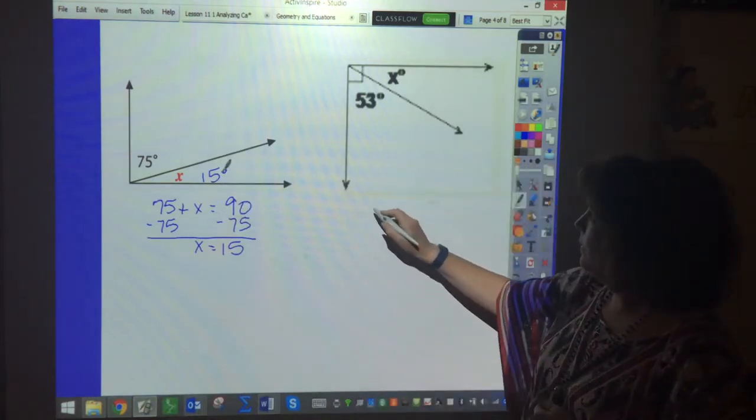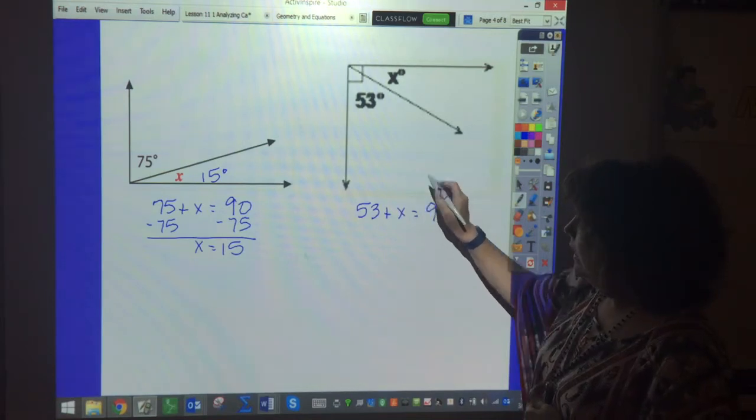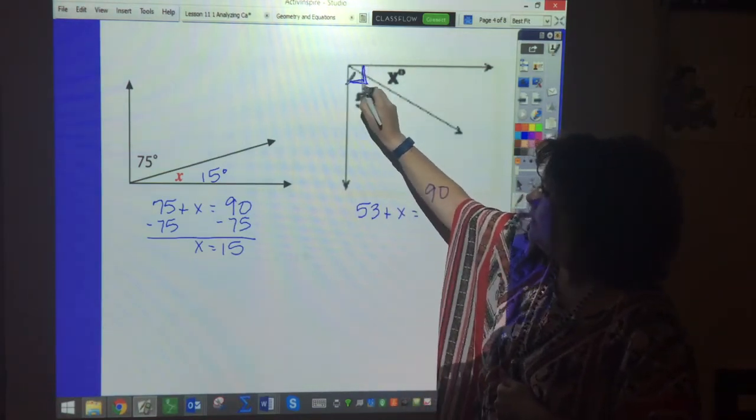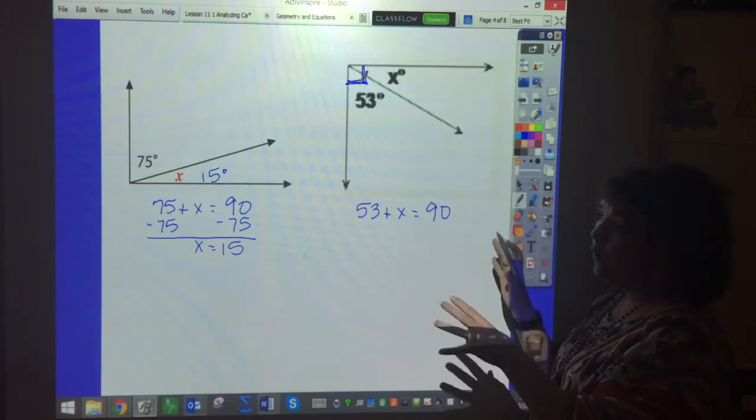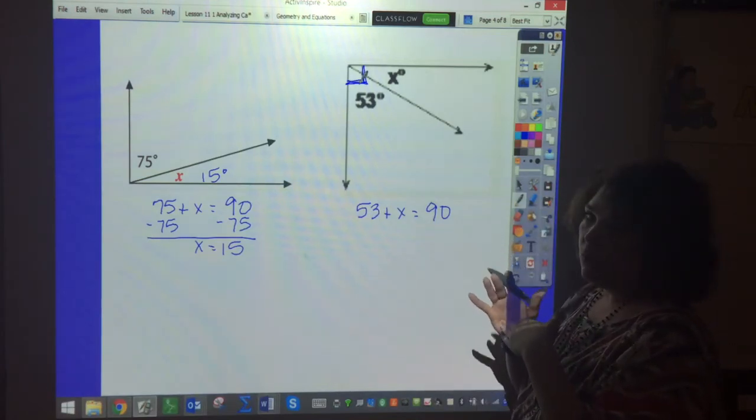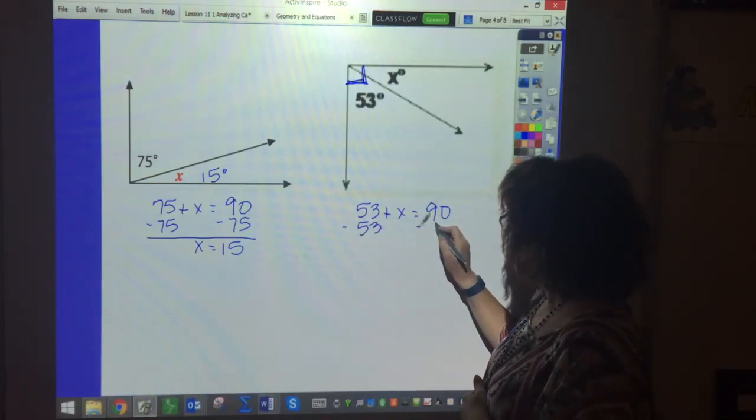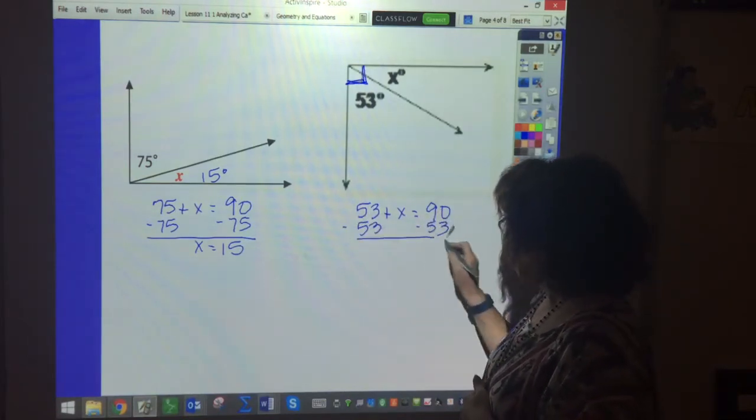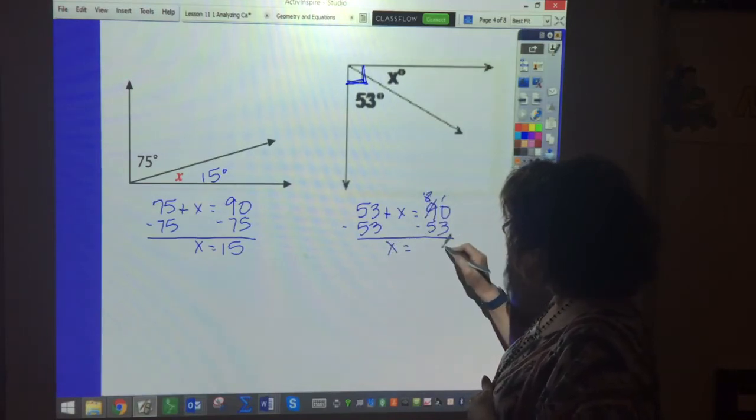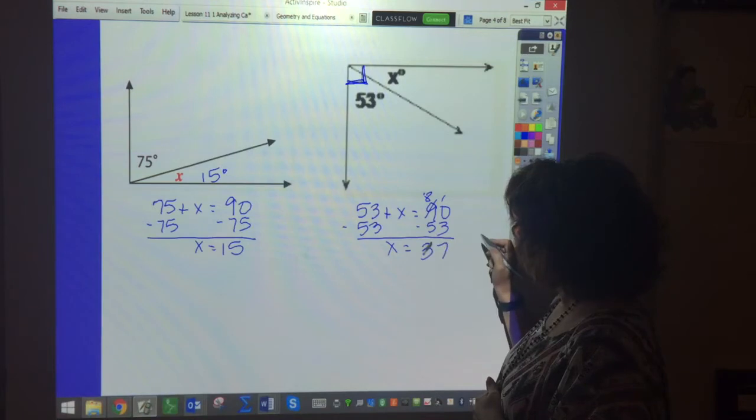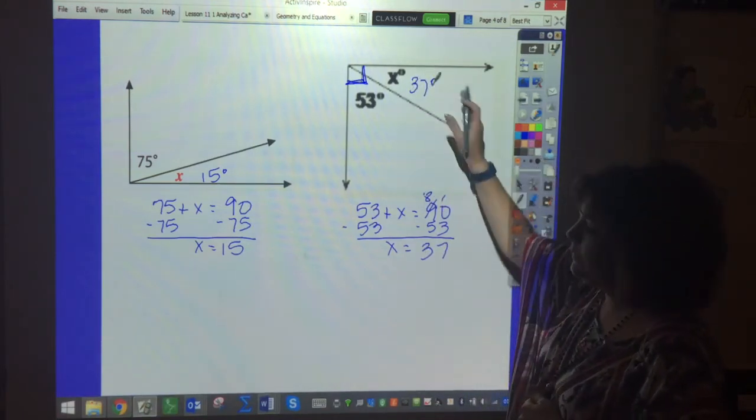And so this one is 53 plus X equals 90. And this right angle here, this little box tells me that that's equal to 90. That's how I know that these are right angles. And so subtract 53, subtract 53. So X equals 37. So 37 degrees and that looks like it's right.